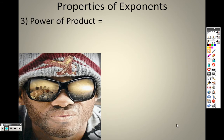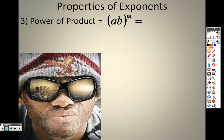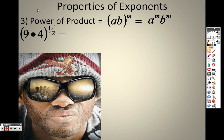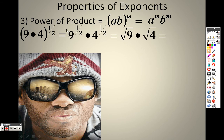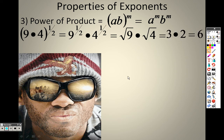Continuing with our properties, we have the Power of a Product property. We said that you take a to the m times b to the m and distribute it through each one. Once again, same with fractions. If I had one-half as the exponent, I take nine to the one-half and four to the one-half. Nine to the one-half is the square root of nine, which is 3, and four to the one-half is the square root of four, which is 2. So three times two is six.